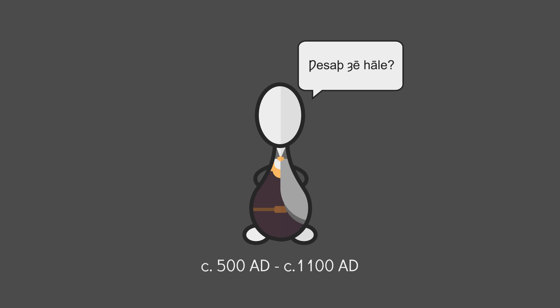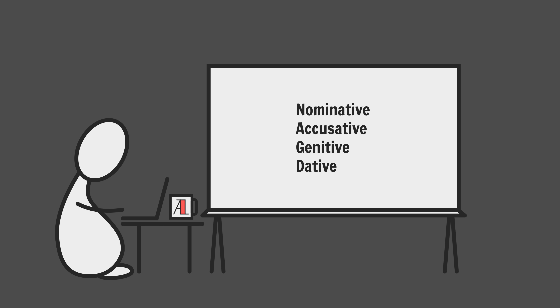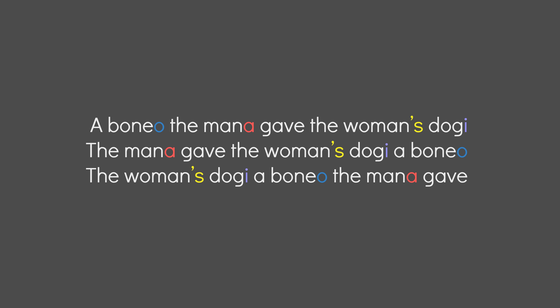Old English had an extensive case system, but now all that's left is just some vestigial stuff. So those are the four basic cases. Why? In a word: freedom. With everything marked, word order is no longer crucial. Any permutation of the sentence will still convey the same meaning. This frees up word order to do more subtle things, like express fine-grained tonal differences. That's noun cases encoding sentence-level stuff.